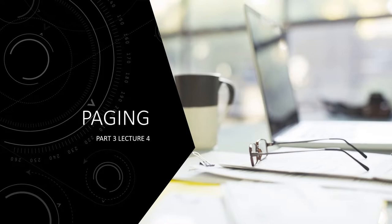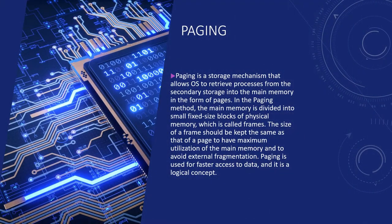Today we are going to discuss paging. Paging is a storage mechanism that allows the operating system to retrieve processes from secondary storage into the main memory in the form of pages. In the paging method, the main memory is divided into small, fixed-sized blocks of physical memory called frames. The size of a frame should be kept the same as that of a page to have maximum utilization of the main memory and to avoid external fragmentation.